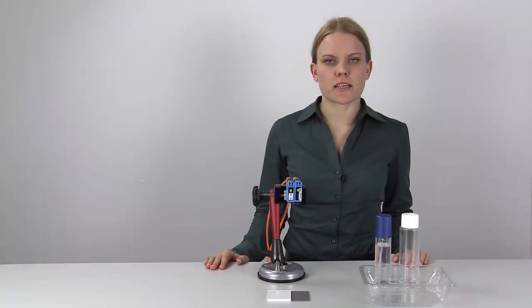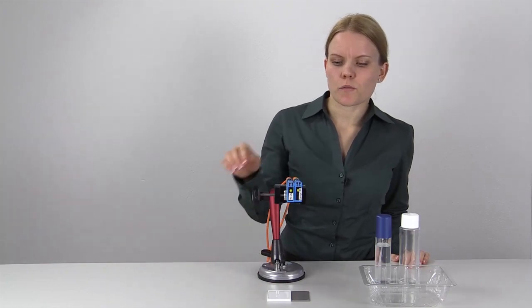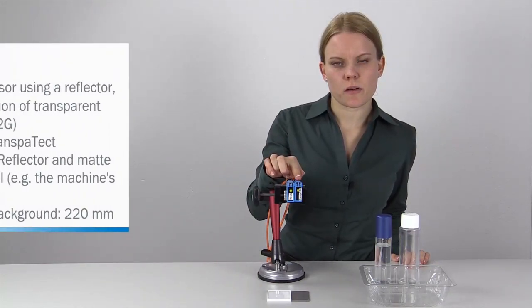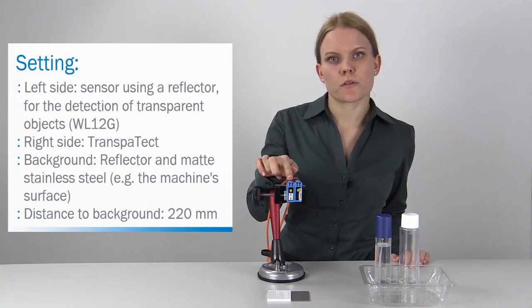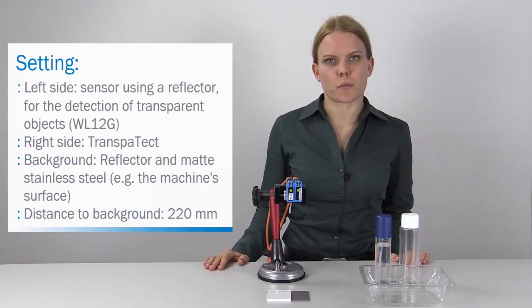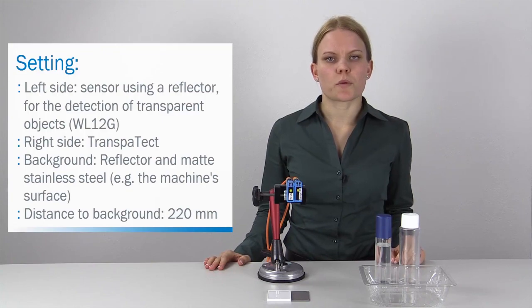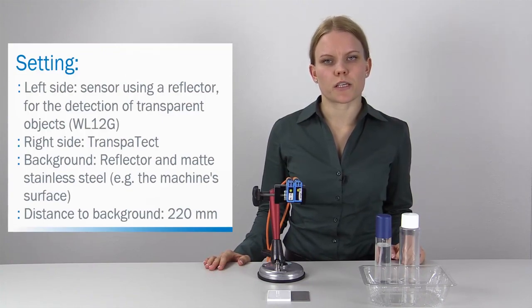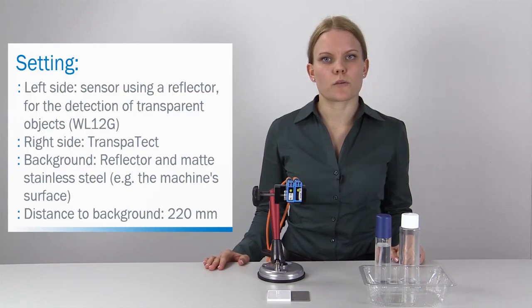Now we come to the second demonstration. We have the new Transpatect sensor and a retroreflective sensor for the detection of transparent objects. Here I would like to model the contamination of your machine and your reflectors with liquid, a situation which often happens in industrial environments.